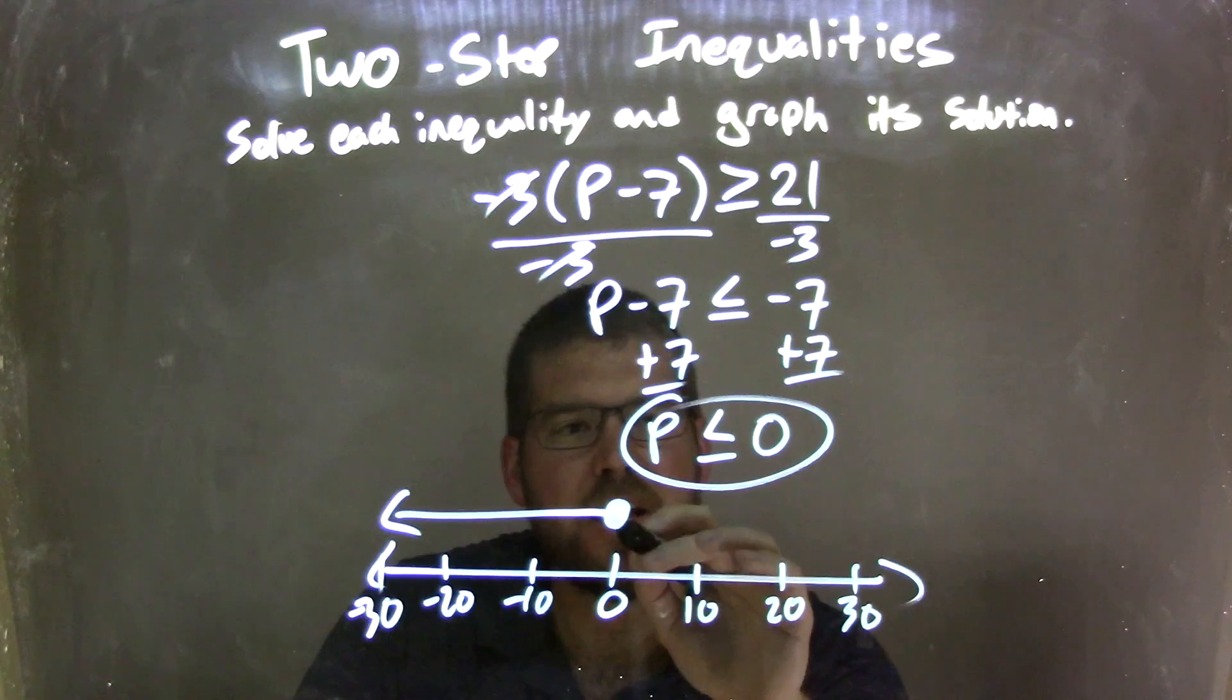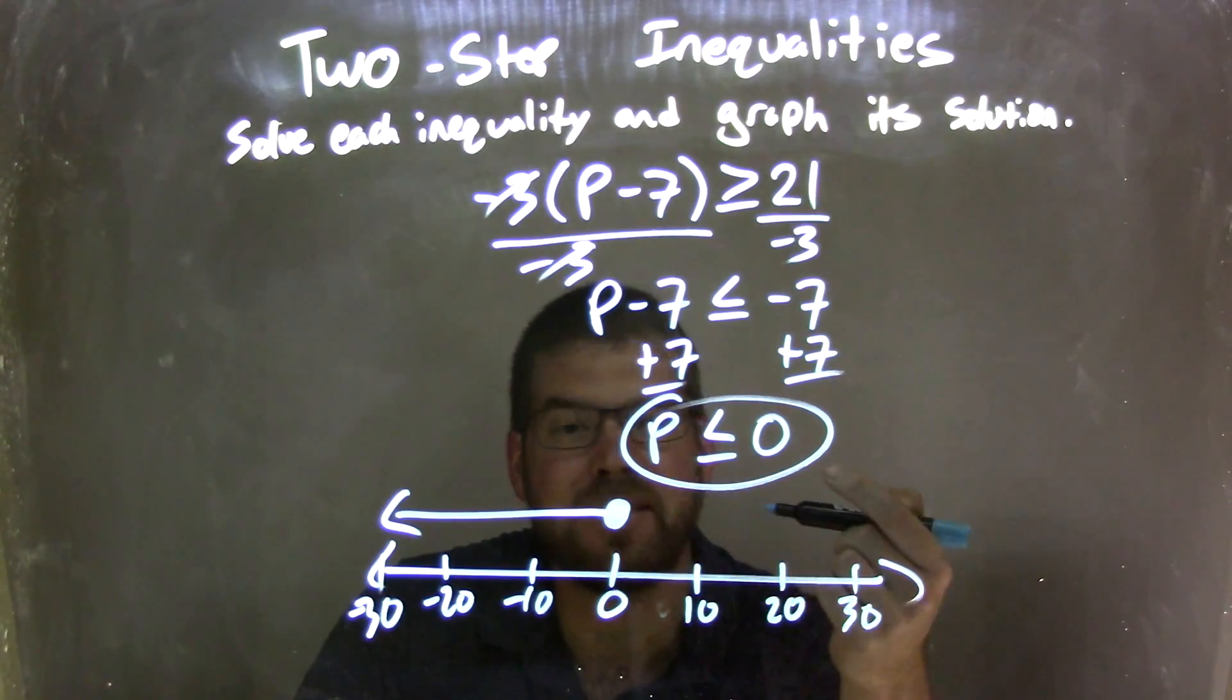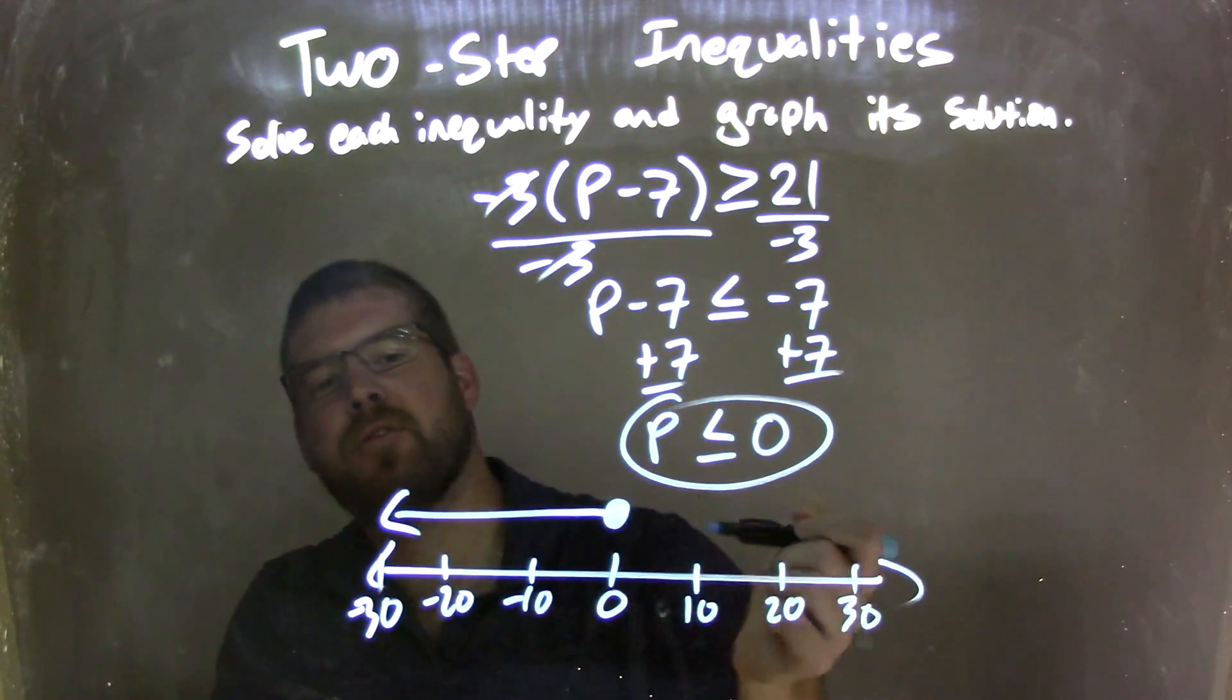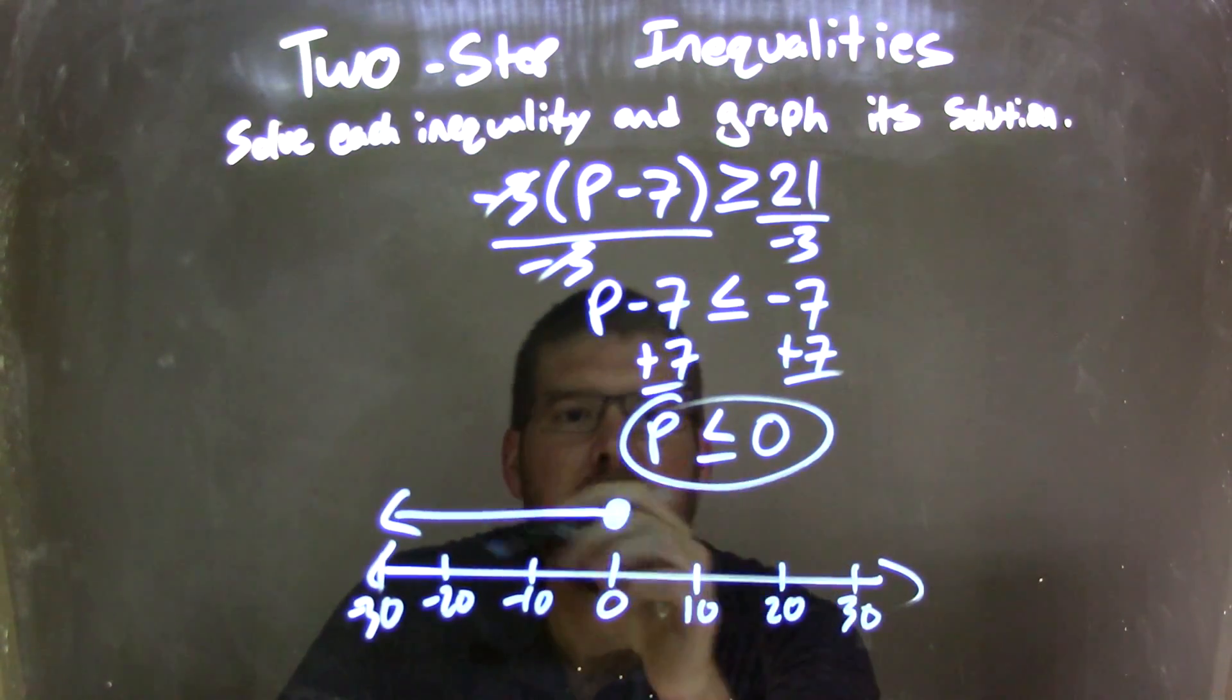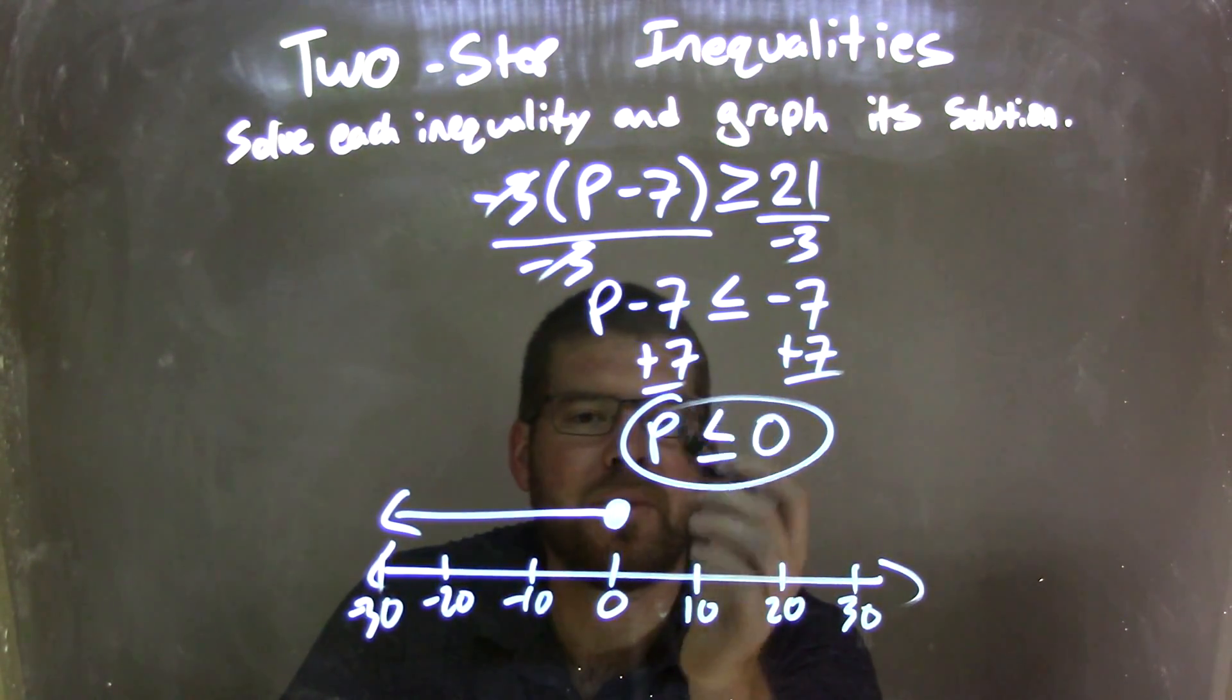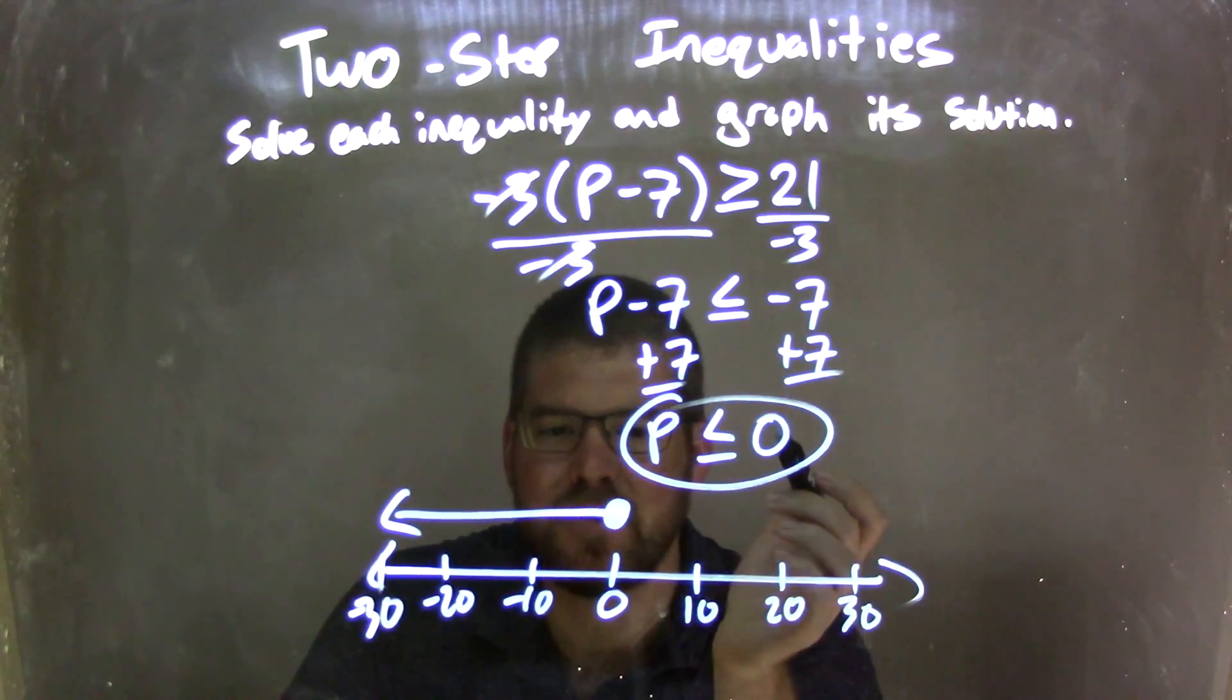So now I need a graphic. It's equal to, so I have a closed circle there, and since it's less than, I put the arrow to the left. And so now we have a final answer that matches our graph, and the inequality is P is less than or equal to 0.